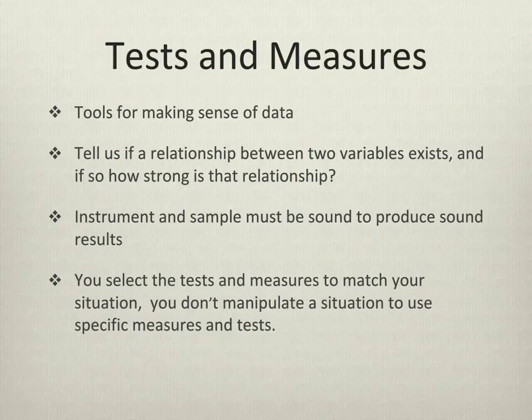In order for your tests of significance and measures of association to work properly, your sample and your measurement instrument must be sound. How do you select the tests and measures you should use? You select the tests and measures to match your situation. You don't manipulate a situation to use specific measures or tests. In other words, you can always learn a new test appropriate to the data that you have. You don't try to force data to fit into something that allows you to use a particular test.